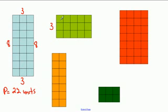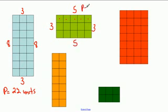For the green shape, there are three units on two sides and five units on the other two sides. The perimeter equals five plus five is ten, plus three plus three is six. So sixteen units.